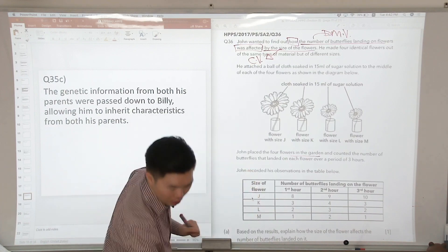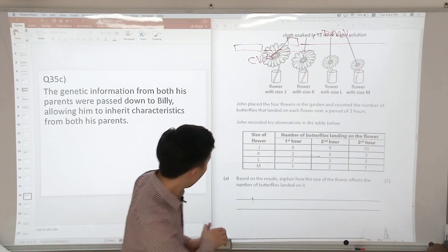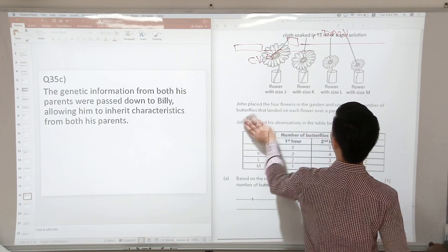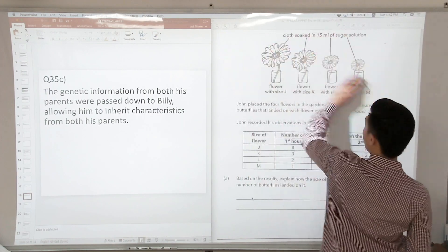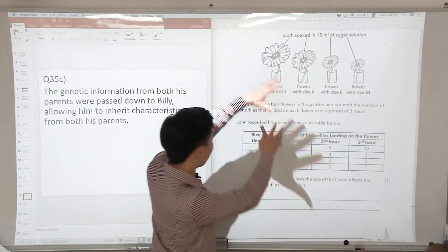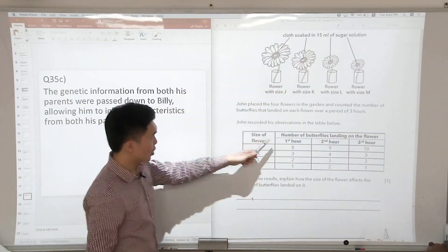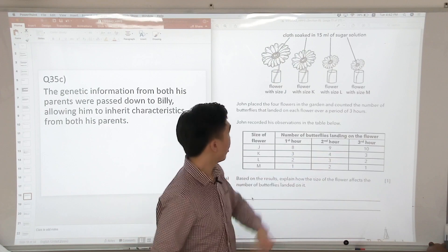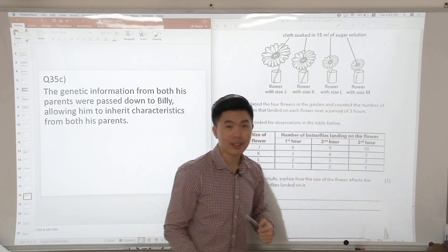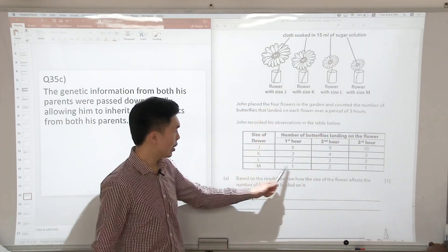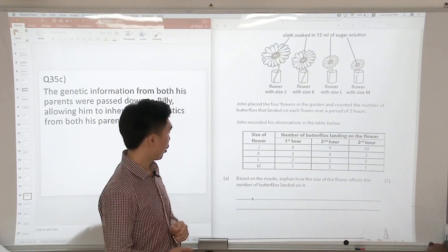And based on the results, if you look at it, we notice that the flower with size J, which is the one with the largest size, it has the most number of butterflies landing on it. And then flower with size M, which is the smallest size, has the least number of butterflies landing on the flower.